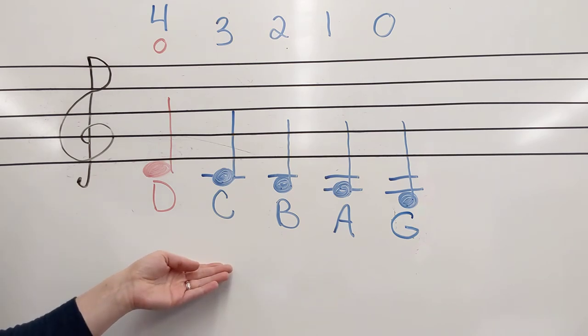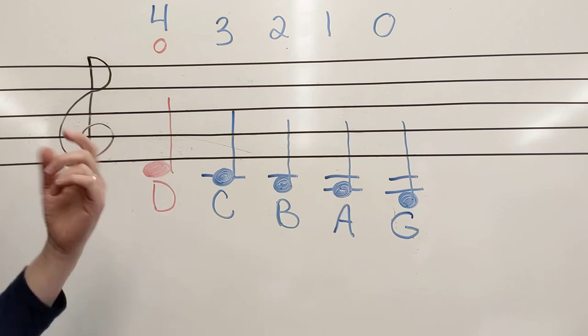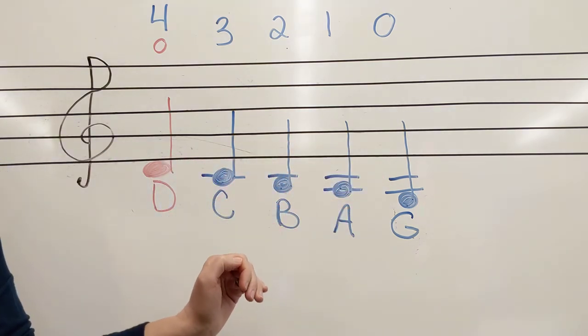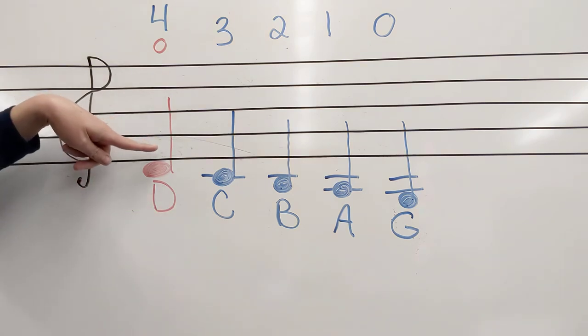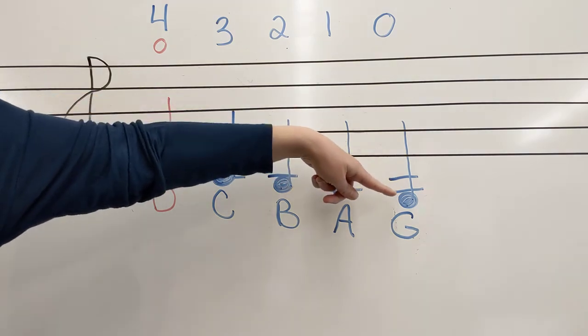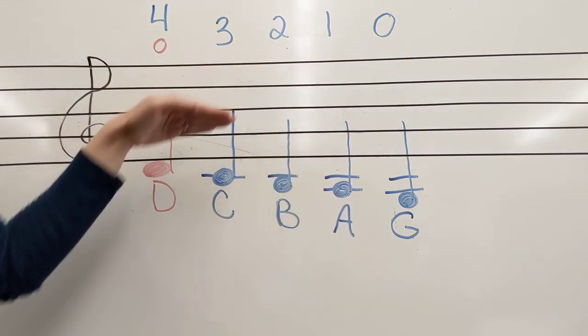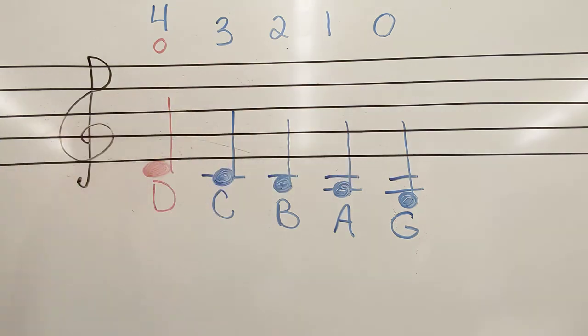So those are your G-string notes for violin. They can be tricky with all these ledger lines. And sometimes it fools people. They think, oh, there's more lines, so that note must be higher. But the way I like to think about it is if you were standing on top of this D, you'd be walking down by step to get to the G. So when we're adding more lines, we're making our notes lower as we go down our scale.